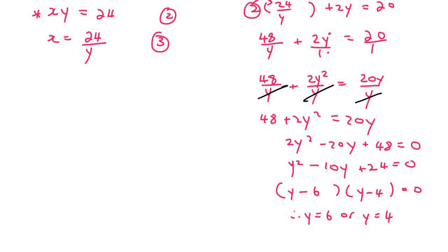Now that we have our y values, we can now go get our x values. So what we then do is we use number 3 again. So if y is equal to 6, then x would be equal to 24 over 6, which would be equal to 4. And if y was 4, then x would be equal to 24 over 4, which would be 6.